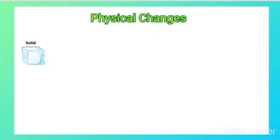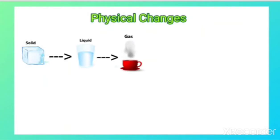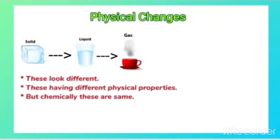The physical changes we observe during the interconversion of states of matter — like solid, liquid, and gas — for example, solid converted into liquid and liquid converted into gas. These look different and have different physical properties, as we learned in the previous chapter, but chemically these all are the same.